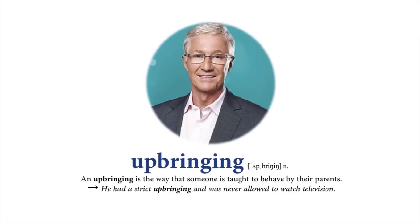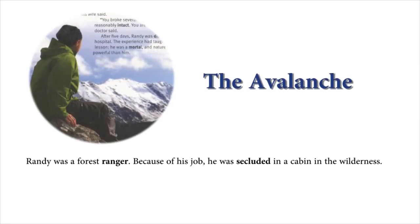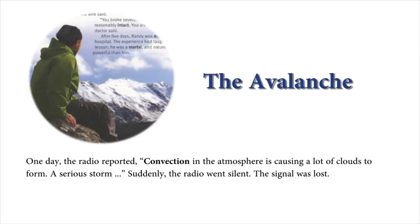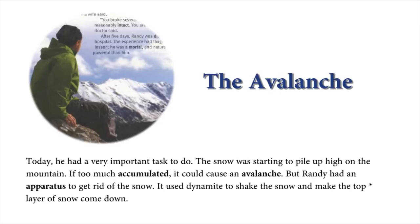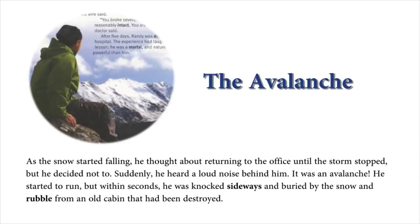The Avalanche. Randy was a forest ranger. Because of his job, he was secluded in a cabin in the wilderness. One day, the radio reported, 'Convection in the atmosphere is causing a lot of clouds to form. A serious storm.' Suddenly, the radio went silent — the signal was lost. He went outside and looked at the overcast sky. Anybody else would have taken the dark sky as an omen of a very bad storm, but not Randy. His upbringing had taught him consistency. He had done this job for years, and nothing could stop him. Besides, he thought nothing could hurt him. Today, he had a very important task to do. The snow was starting to pile up high on the mountain. If too much accumulated, it could cause an avalanche. But Randy had an apparatus to get rid of the snow — it used dynamite to shake the snow and make the top layer of snow come down. As the snow started falling, he thought about returning to the office until the storm stopped, but he decided not to.